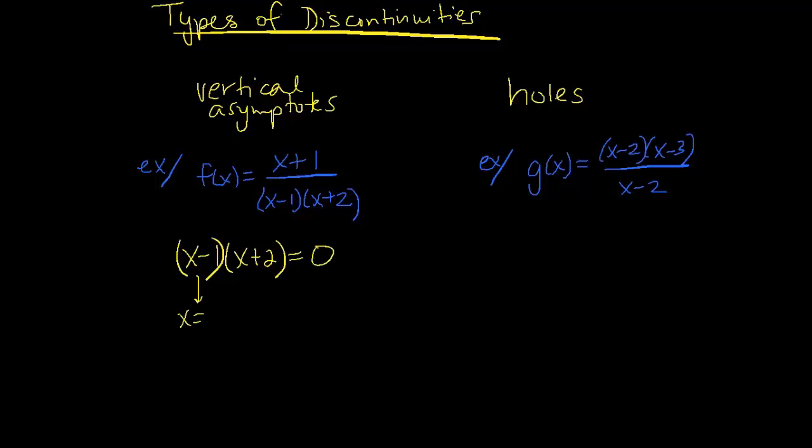So when will x minus 1 times x plus 2 equals zero? Well, we should know the values of 1 and negative 2 make that happen. Now notice that is a little different than the example to the right. The example to the right actually can simplify before we look at the denominator. So there's a little foreshadowing of what's to come.